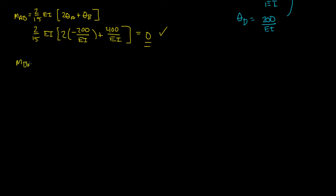And then you have MBA. And MBA was 2 EI over 15, 2 theta B plus theta A. And if you plug all this in, you'll get 2 over 15 times EI. 2 theta B, theta B was 400 over EI plus the negative 200 over EI. And if you solve this out, you should get 80 kip foot.